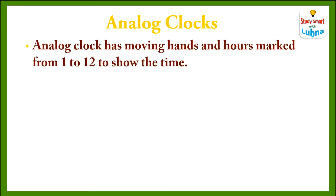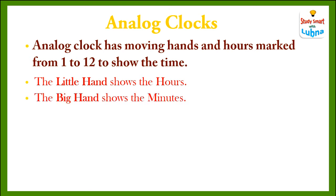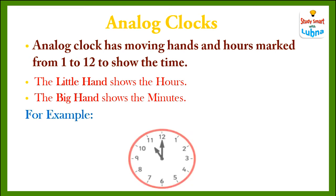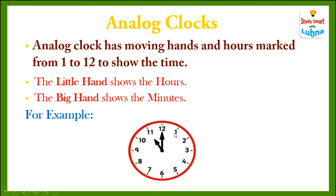First of all, we should know what analog clocks are. An analog clock has moving hands and hour marks from 1 to 12 to show the time. The little hand of the analog clock shows the hours and the big hand shows the minutes. The analog clock has two hands: the big hand and the small hand. The small hand shows the hours and the big hand shows the minutes.